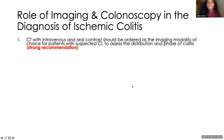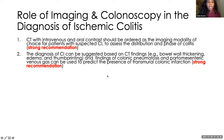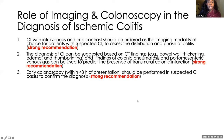CT is strongly recommended when you have a high suspicion for colon ischemia. The diagnosis can be highly suggested based on CT findings with bowel wall thickening and edema, and it can help risk stratify. If you find colonic pneumatosis or porto-mesenteric venous gas, that can be suggestive of transmural colonic infarction, which is a surgical indication. Early colonoscopy should be performed if ischemic colitis is suspected and performed within 48 hours of presentation — this is also a strong recommendation.